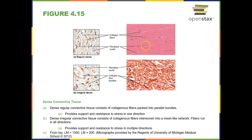Dense regular connective tissue produces organs like our tendons and ligaments, whereas dense irregular connective tissue makes up the majority of the dermis of our skin, where there are lots of different lines of stress.